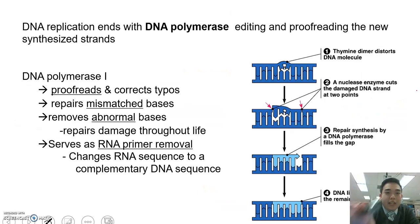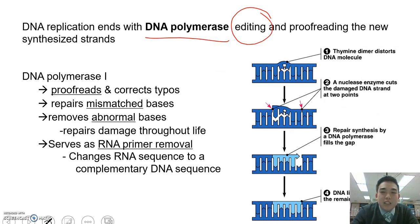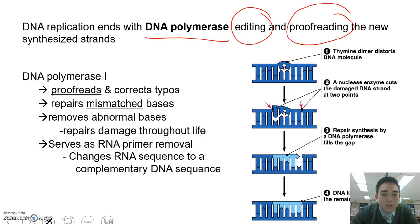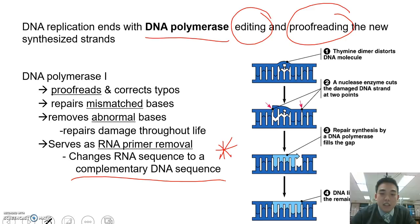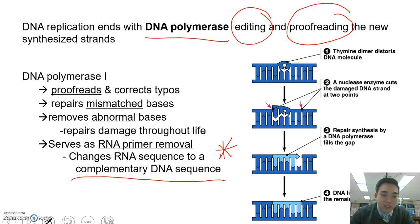DNA replication ends with DNA polymerase coming back and editing any mistakes, proofreading all the newly synthesized strands. One of its major functions is going back in and removing that short sequence of RNA laid down by primase, and changing it to a complementary DNA sequence. Make sure that you complete your skeleton notes, please write down any questions you may have, and bring those to class. Feel free to watch this video lecture again — it's a bit confusing, but in class we'll definitely go over it in more detail. I'm sorry this video was a little rushed, but I think you'll be able to figure it out. If you can't, come back and ask questions.